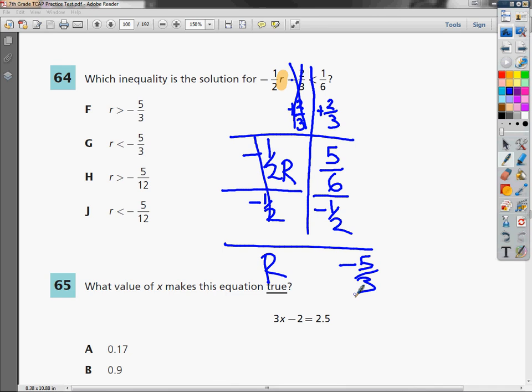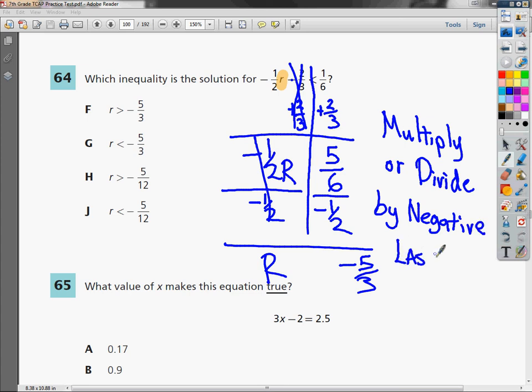The other thing we have to think about, we're almost done. If you multiply or divide by a negative in the last step, flip the inequality over.